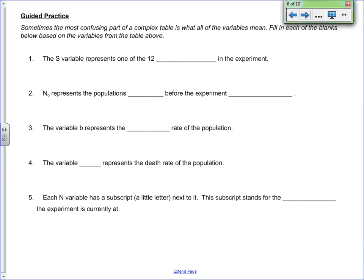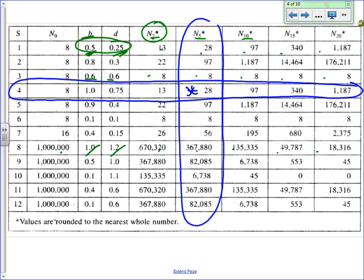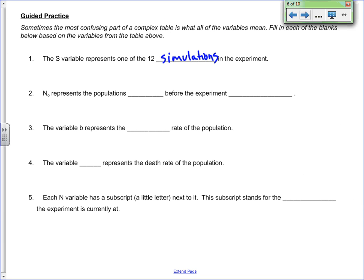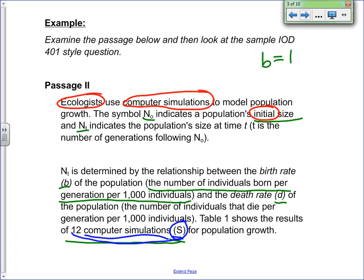Let's review the answers. The S variable represents one of the 12 simulations in this experiment — you can find that straight from the passage where it says S represents the 12 computer simulations. N0 represents the population's initial size before the experiment started — the symbol N0 indicates the population's initial size, and we needed to remember that 'initial' means before it starts.